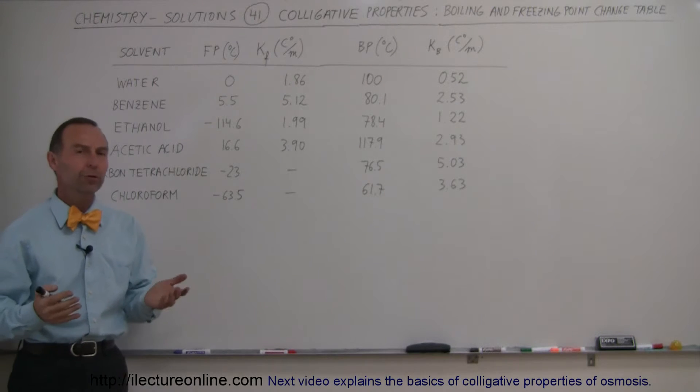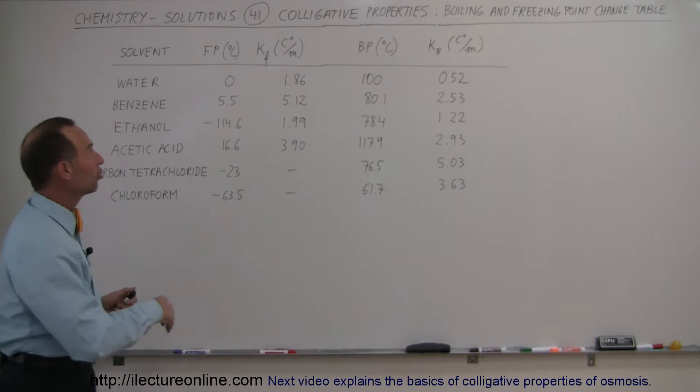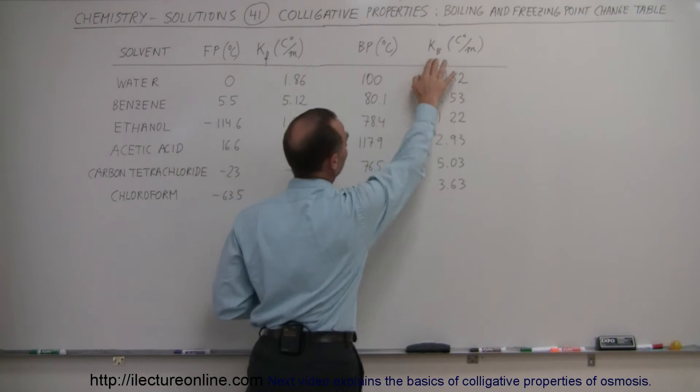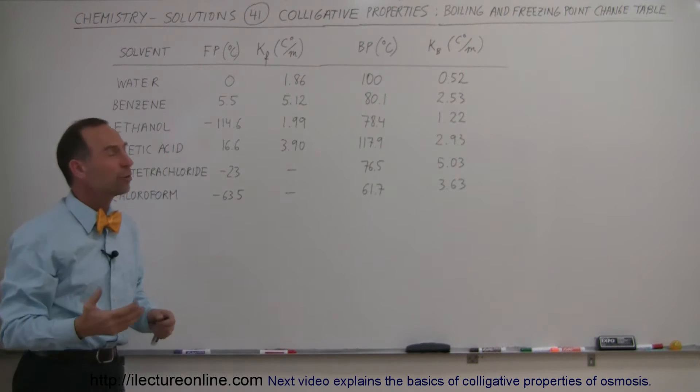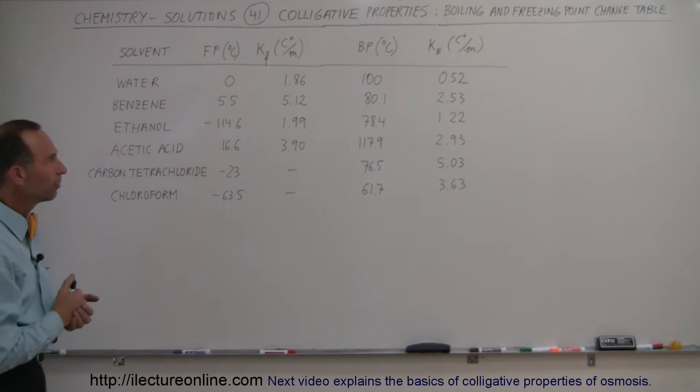I thought it might be helpful to put up a little table with a few values that shows the change constant for the freezing point and the change constant for the boiling point in centigrade degrees per molal concentration, in other words, moles per kilogram of solvent.